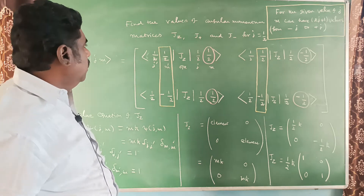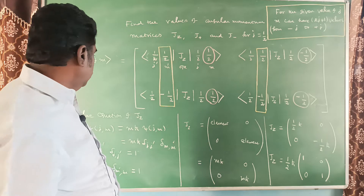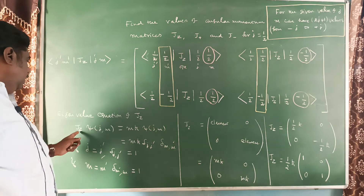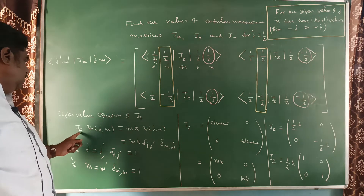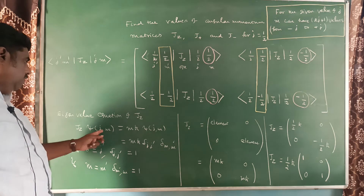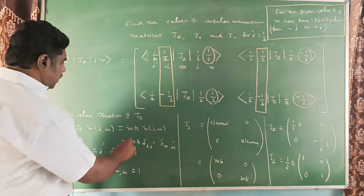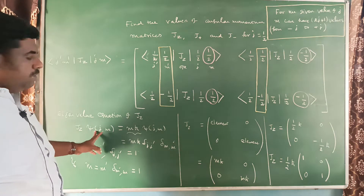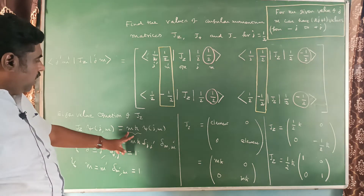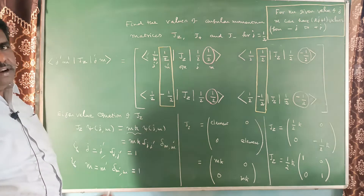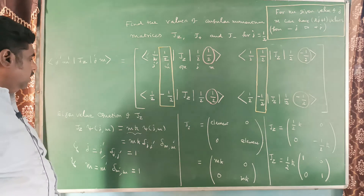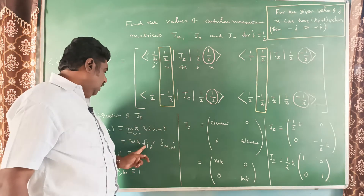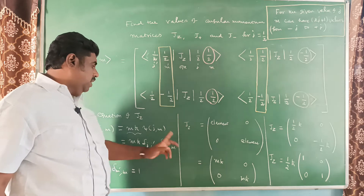Now we should find out the value of the J_z matrix. For that, we take the eigenvalue equation of J_z. The eigenvalue equation is: J_z operating on ψ(J, M) equals M·ℏ times ψ(J, M), where M·ℏ is the eigenvalue. This equation in matrix element form becomes: M·ℏ times δ(J, J') times δ(M, M').